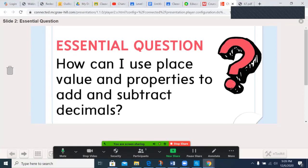Our essential question for Chapter 5: How can I use place value and properties to add and subtract decimals?